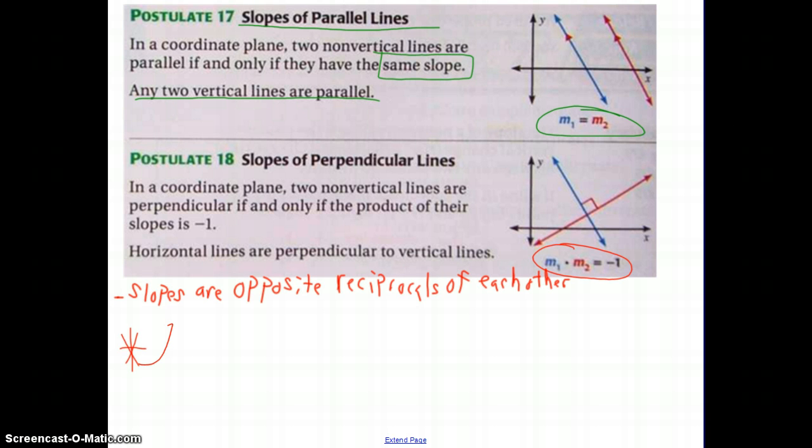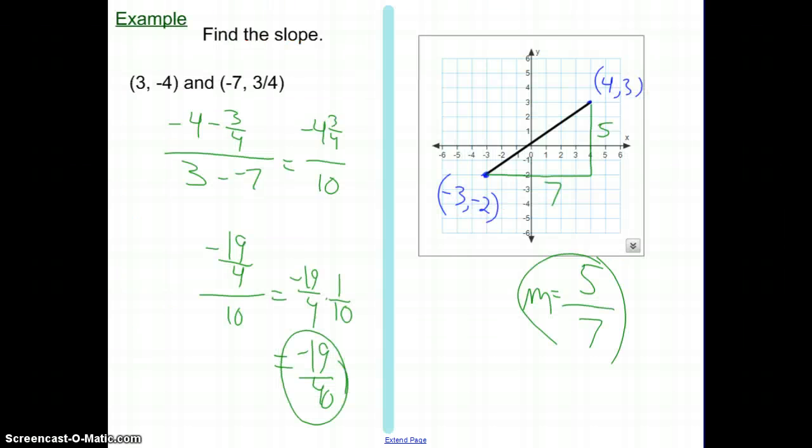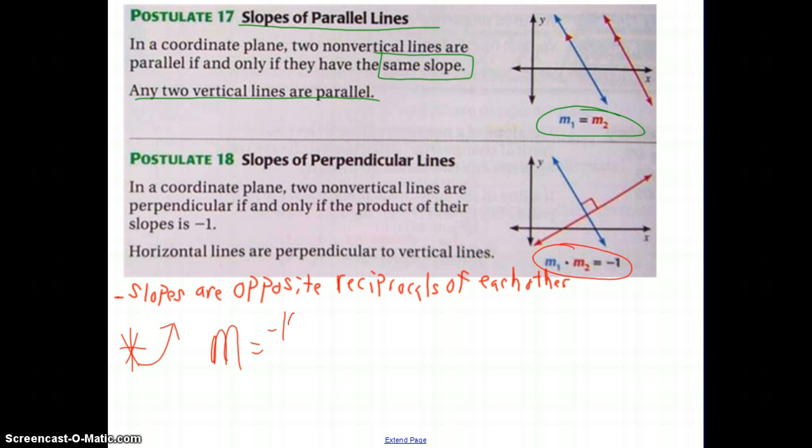I prefer this one: the slopes are opposite reciprocals of each other. So what that means is, in this last problem, we had a slope of -19/40. If we have the slope equal to -19/40, the slope of the line perpendicular to that one is going to be the opposite reciprocal. Opposite just means change the sign - our slope was negative, now it's positive. The reciprocal: you flip that fraction over, so it's 40/19. Those two slopes are of perpendicular lines because they're opposite reciprocals. And if you multiply those two slopes together, you would get -1. I just prefer to say opposite reciprocals.